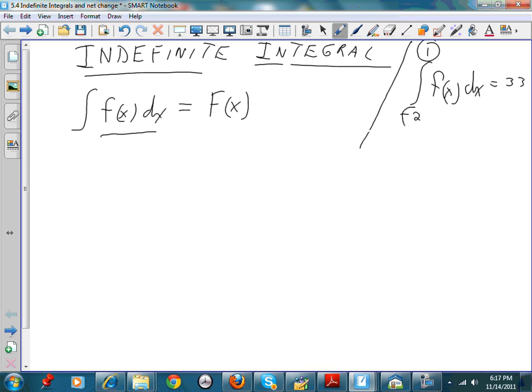Definite meaning we have clear endpoints. x goes from minus 2, x goes to minus 1, right? Clear endpoints, and we call this definite.